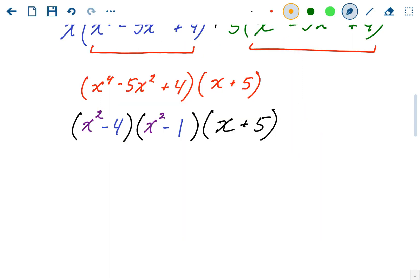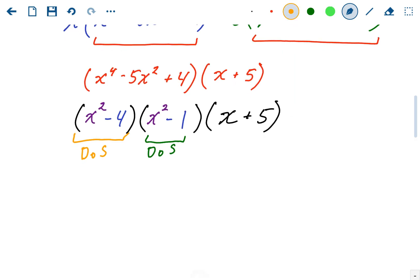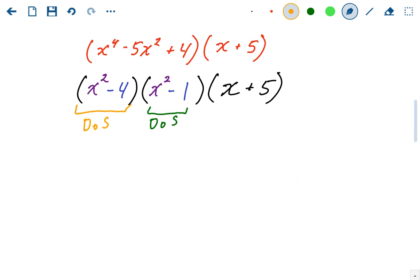So x squared minus 4 is a difference of squares. And x squared minus 1 is also a difference of squares. People forget that 1 is a perfect square. So we're going to factor that using the difference of square pattern. Well, the difference of square pattern is you're always going to have two binomials with the same numbers but opposite signs. So we're going to have x plus 2. Because the square root of x squared is x. The square root of 4 is 2. And then we're also going to have x minus 2.